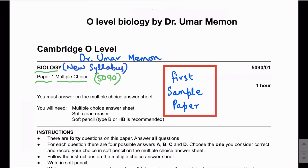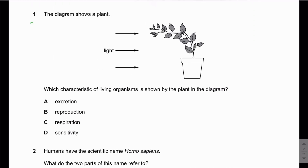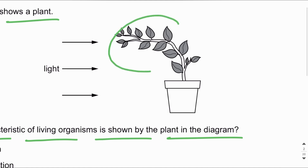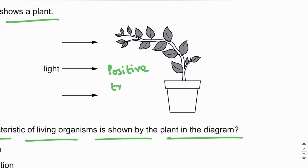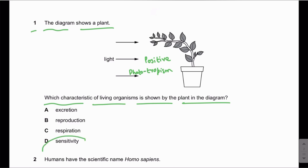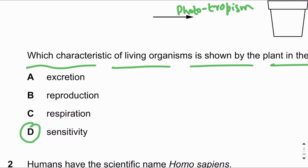Let's start question number one. The diagram shows a plant — which characteristic of living organisms is shown by the plant in the diagram? We can see that the shoot of the plant is growing towards the light, and this is called positive phototropism. Positive phototropism is basically a growth mechanism by which the shoot grows towards the light, and this is an example of sensitivity. So the answer is D.